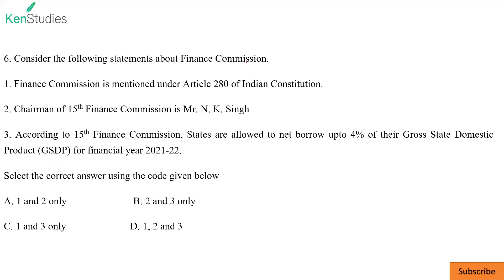Question six: statements about the Finance Commission. Finance Commission is mentioned under Article 280 of the Indian Constitution — correct. Chairman of the 15th Finance Commission is Mr. NK Singh — correct. According to the 15th Finance Commission, states are allowed to net borrow up to 4% of their Gross State Domestic Product for financial year 2021-22 — also correct, due to increased fund requirements from the COVID-19 pandemic. D is the correct answer.